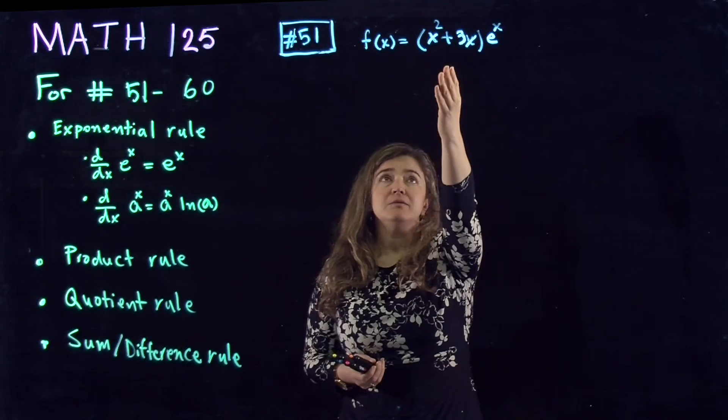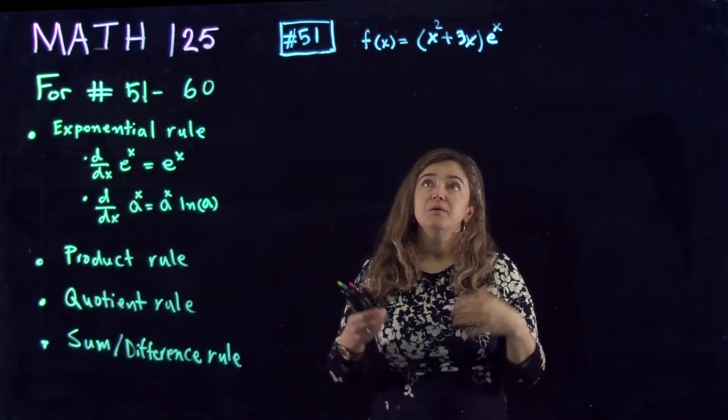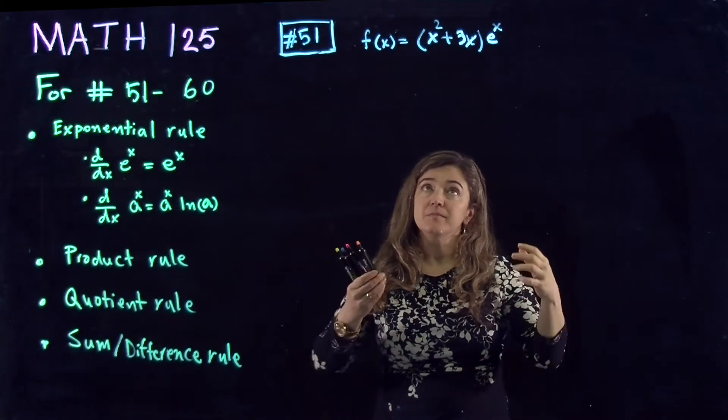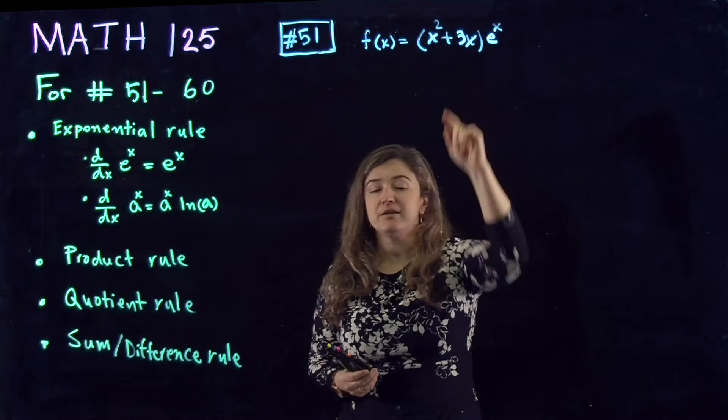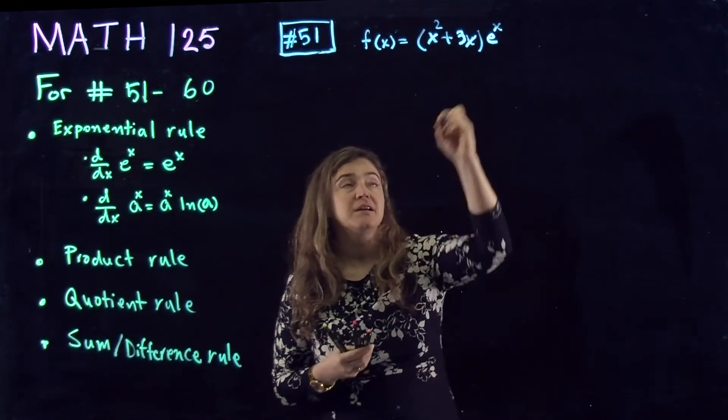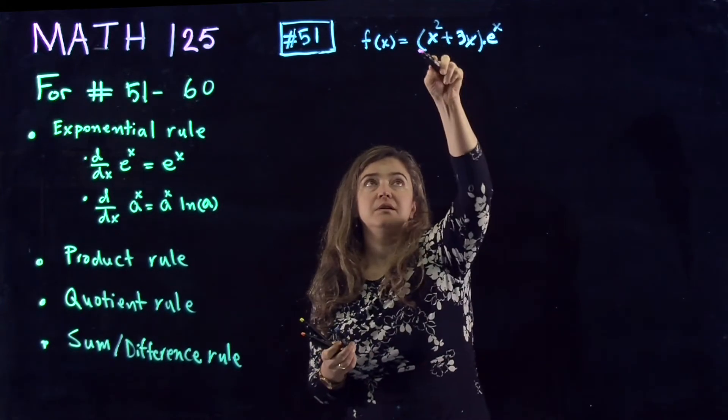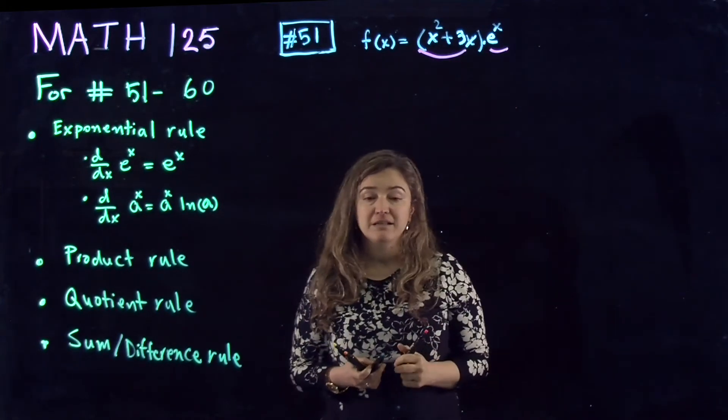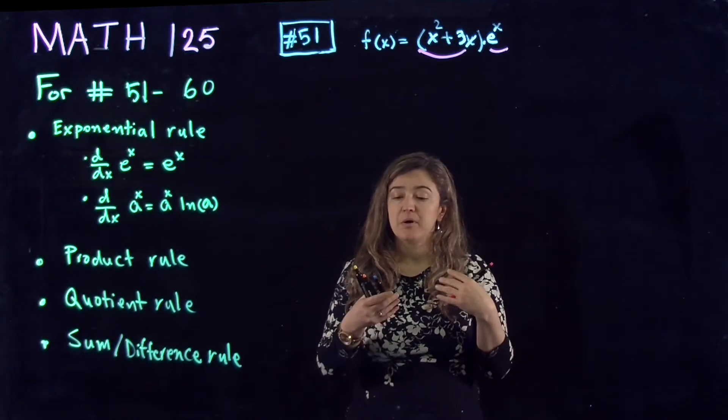When I'm looking at f of x equal to x squared plus 3x times e to the x, what I see coming out is this product rule. The only way that they're connected, there are two functions, function 1 and function 2, and they are connected with their product. So the first thing that I do is I do a product rule.